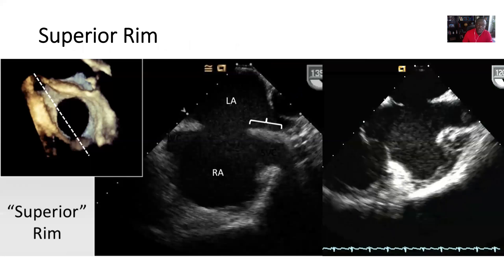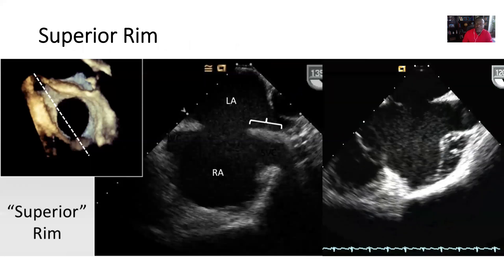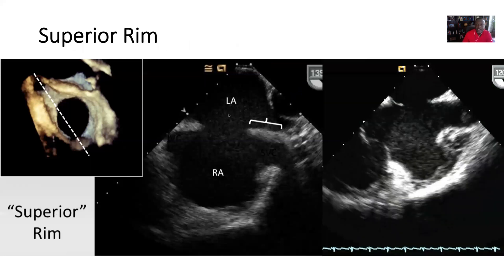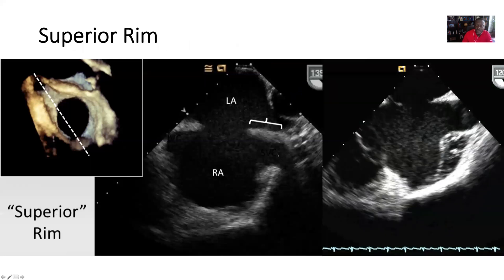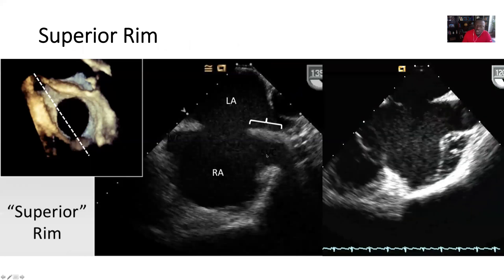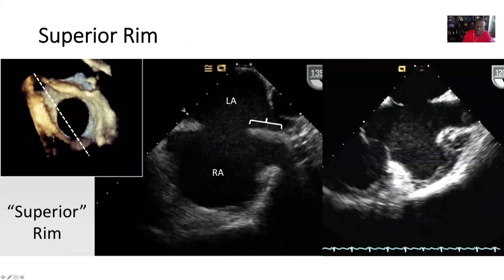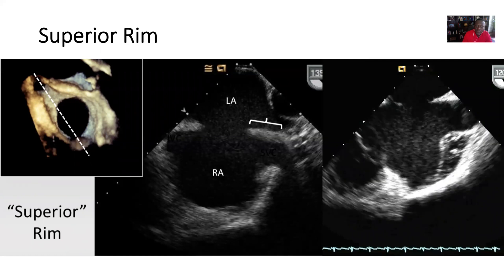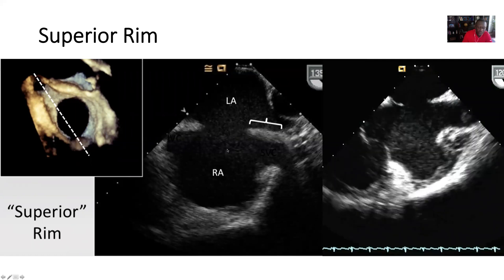Here we see the superior rim — we have a nice rim around the ASD. A deficient superior rim is not a common occurrence, so we usually will have a decent-sized superior rim on most of our ASDs.